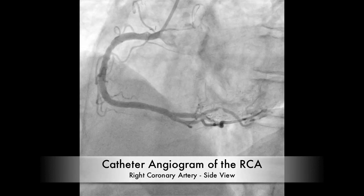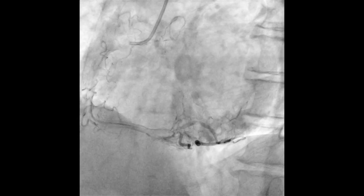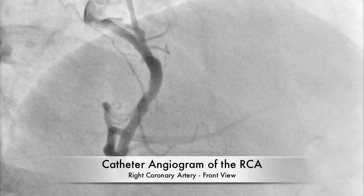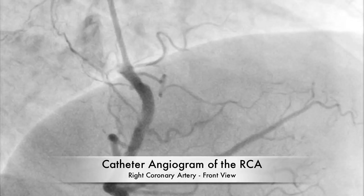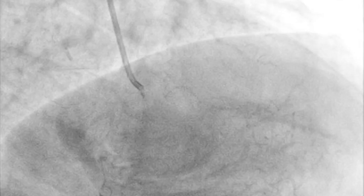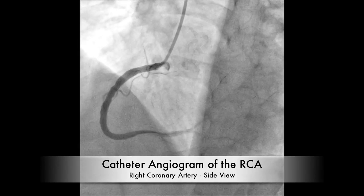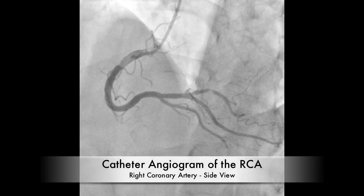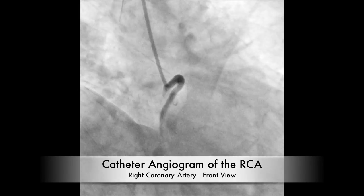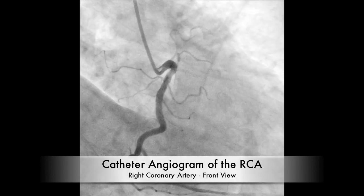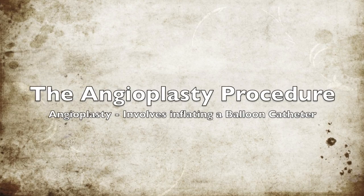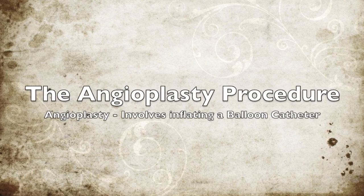The catheter angiogram of the RCA — here is the side view, and now we see the front view of the RCA before stenting. In the side view, you can see that the top branch is kind of crimped — that is a blockage that is 75% blocked.